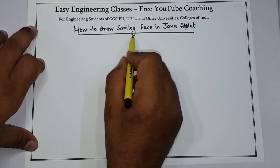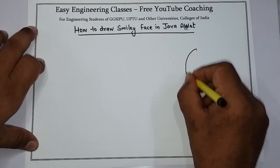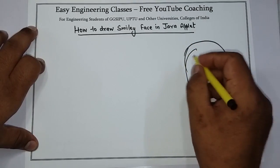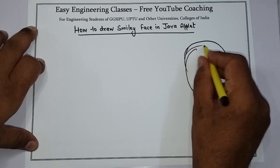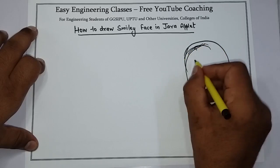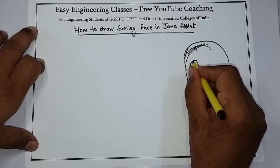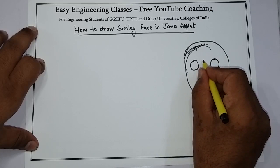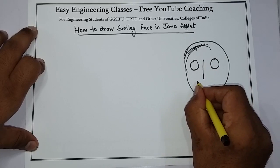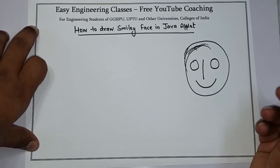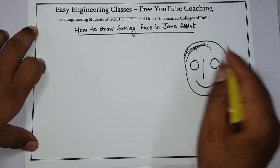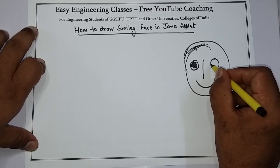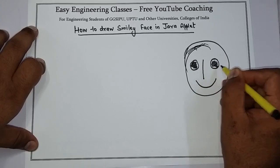If you want to make a smiley face, you need to draw a rough idea. Suppose I have to draw a smiley face like this. These are the eyes. This is suppose the nose and the smile. So I want to draw something like this.